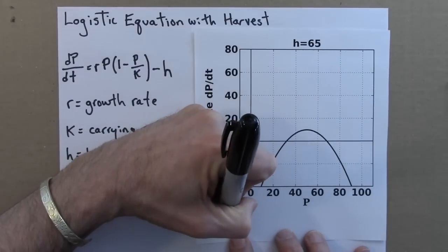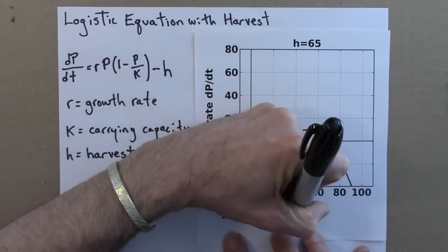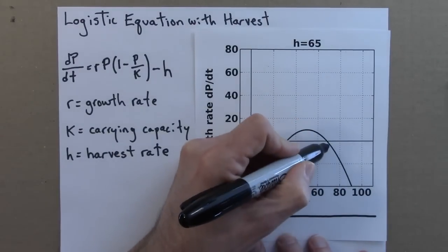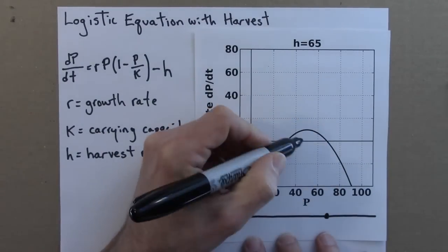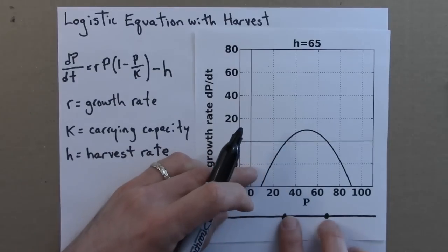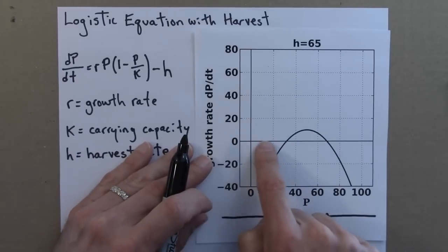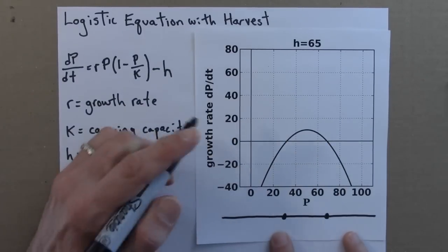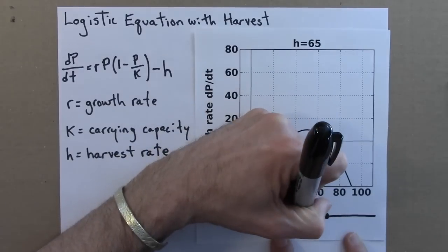So let's draw the phase line for this. There's my line, and now I have a fixed point here and there. Remember, fixed points occur when the growth rate is zero, so here and here.